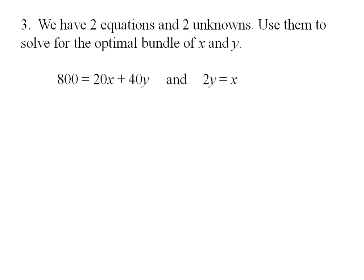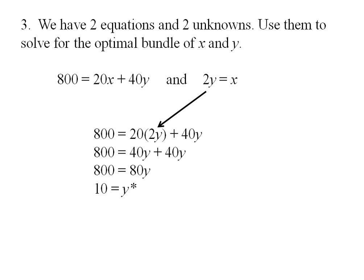So 800 equals 20 times 2y, substituting in for x, plus 40y. That's 800 equals 40y plus 40y or 800 equals 80y or 10 equals y. So the optimal bundle contains 10 units of good y.